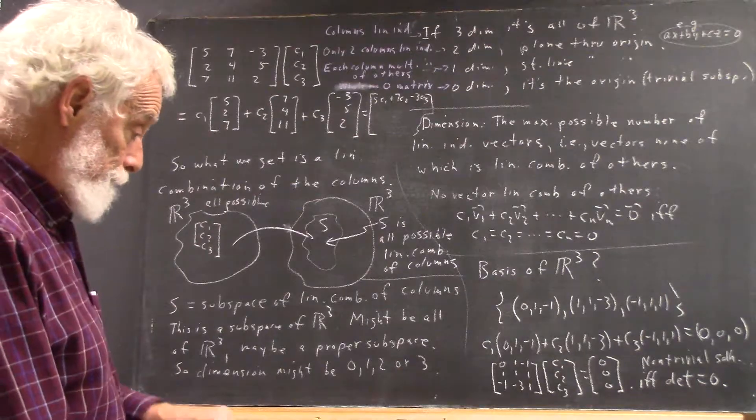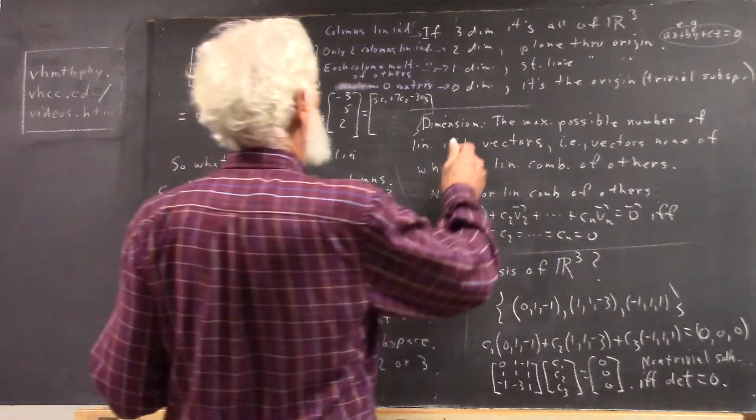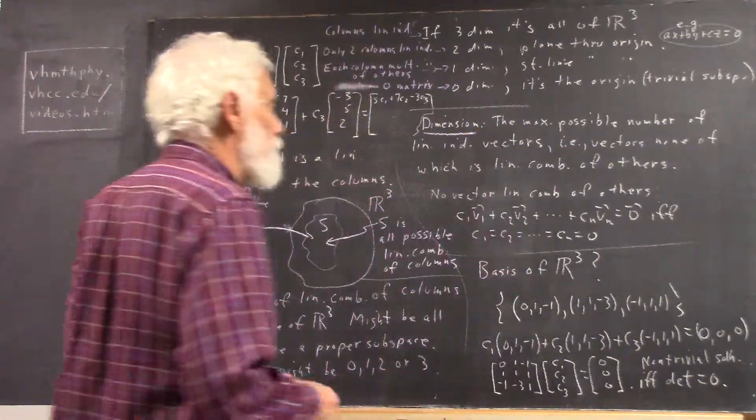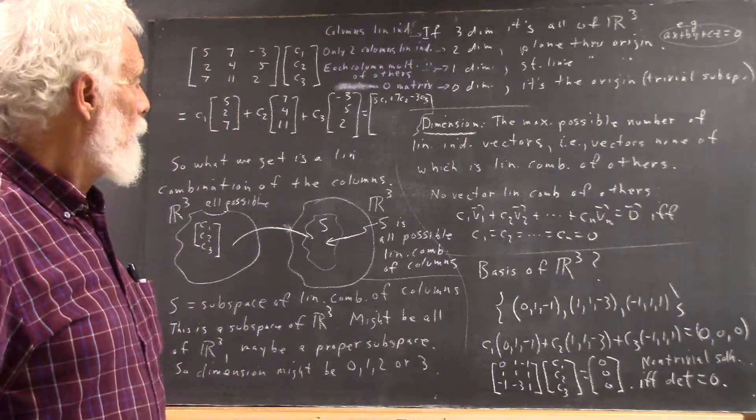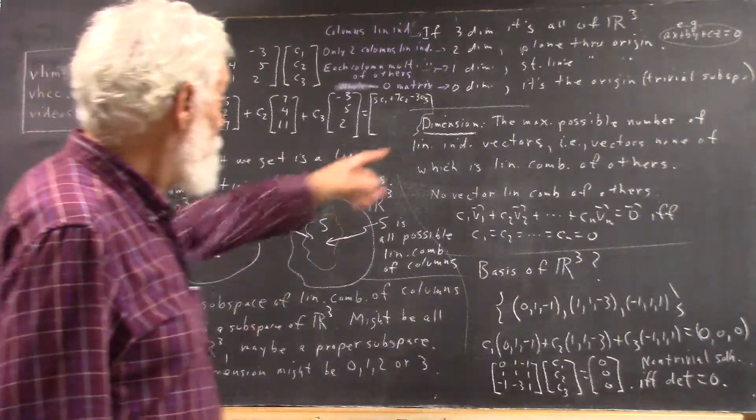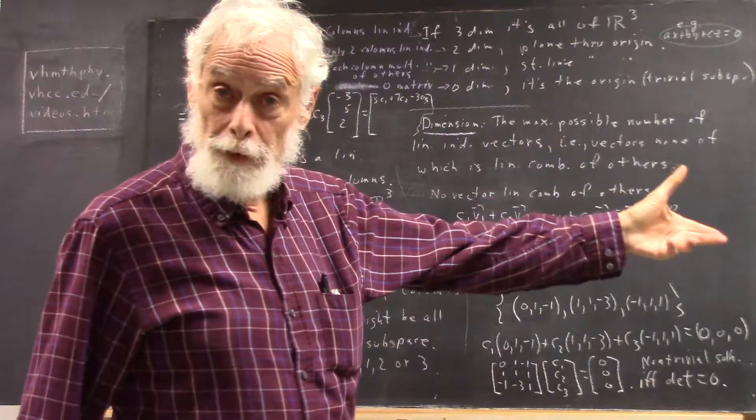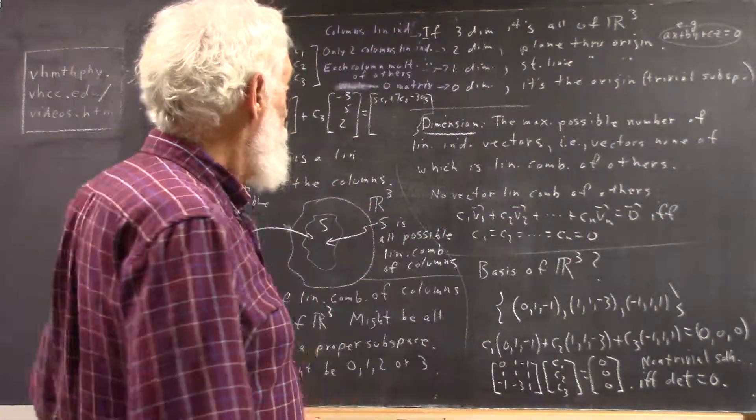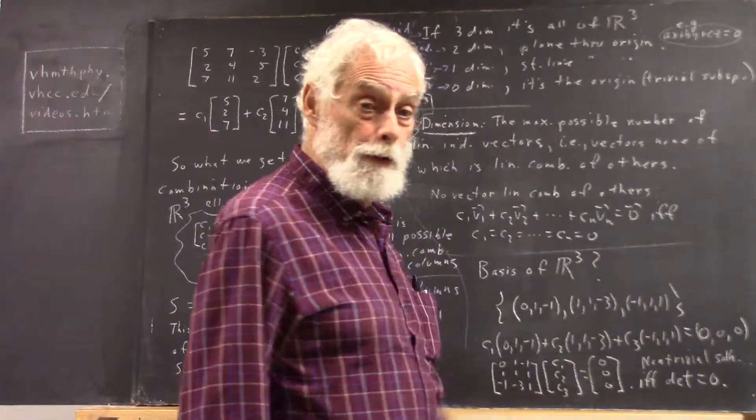Now, dimension. That is something we should be aware of, but let's be sure. What's dimension of a space or a subspace? It's the maximum possible number of linearly independent vectors.